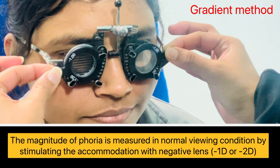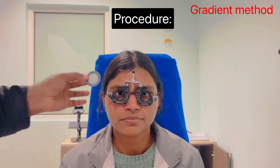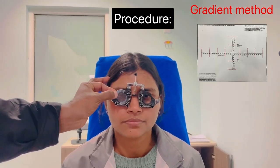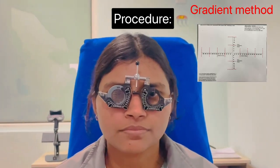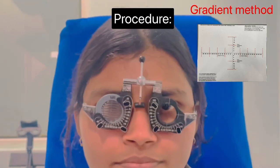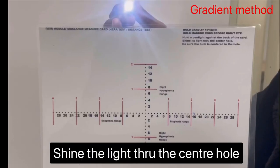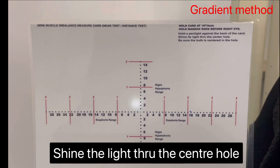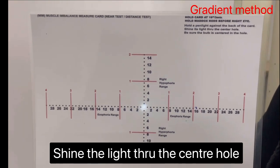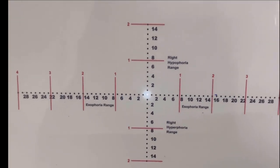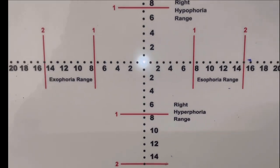Through gradient method, we can measure phoria in normal viewing condition by stimulating the accommodation with negative lens, either with minus one or minus two diopters. To perform this test, place the Maddox rod on a trial frame and ask the patient to look straight at the center of the modified Thorrington chart which is kept at 40 cm. The chart should be illuminated through the center and patient should be asked to look at the light.